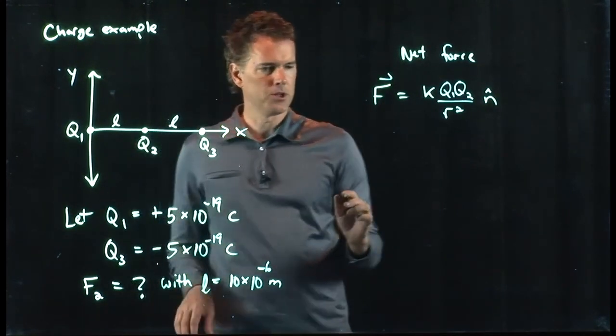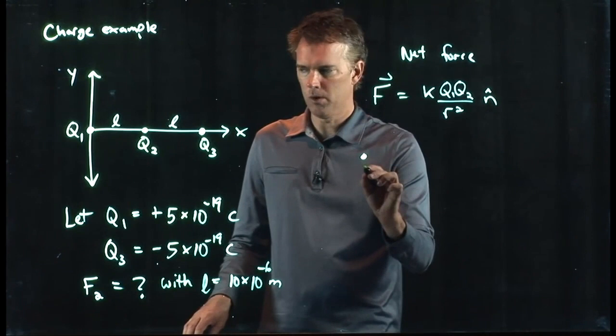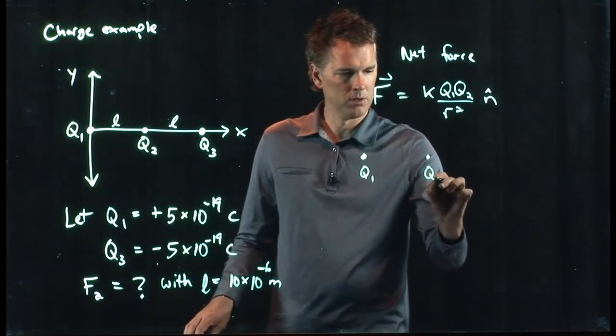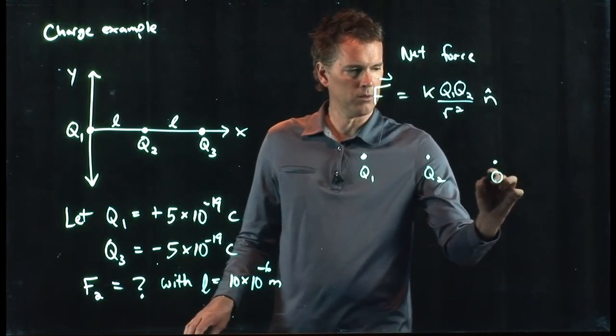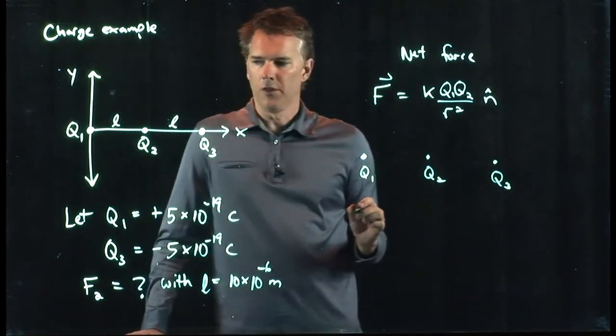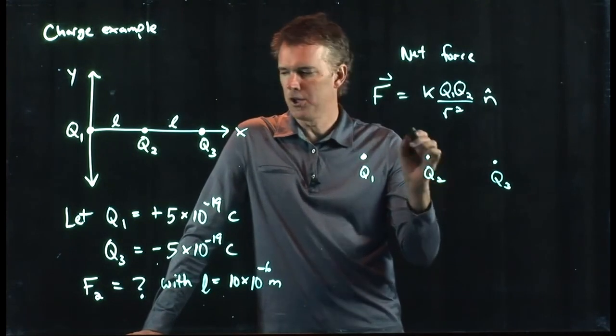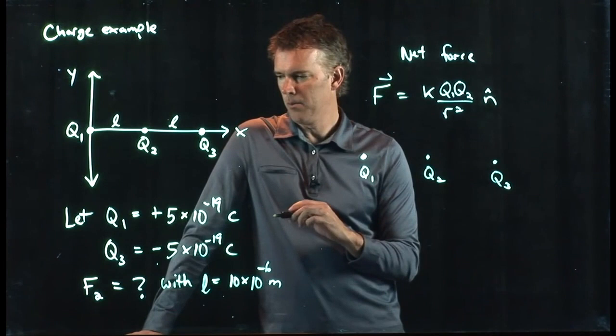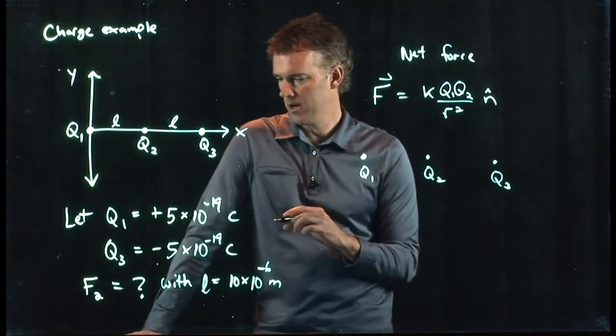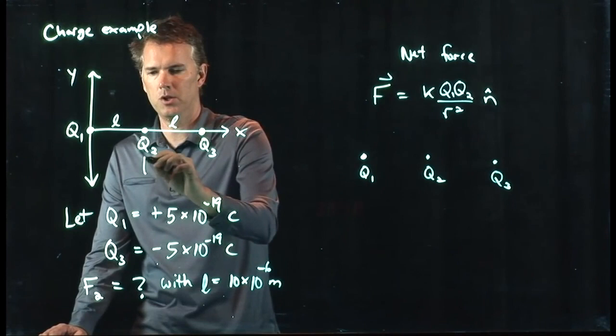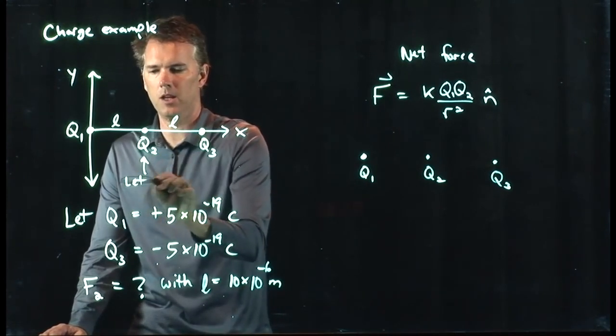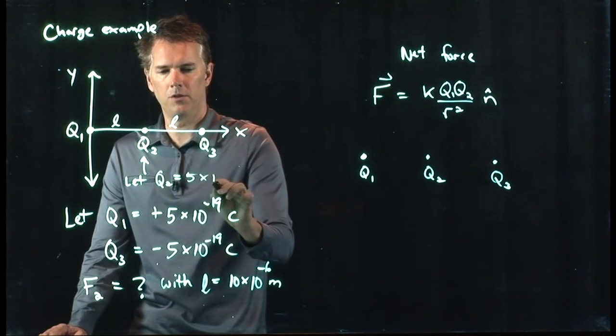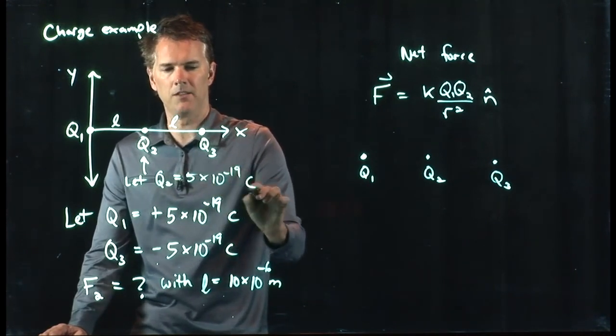Now let's put our three charges right here. We've got q1, we've got q2, and we've got q3. So there is a force on 2 due to 1, and we need one more piece of information here. We need to know what the charge is at q2. So let's say that q2 is equal to also 5 times 10 to the minus 19 coulombs.